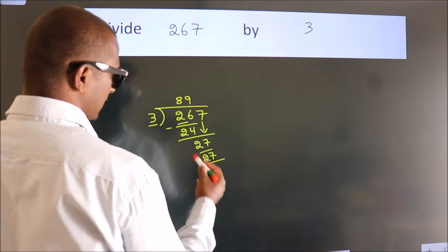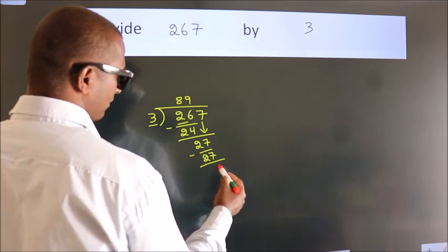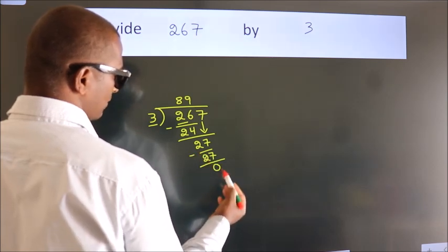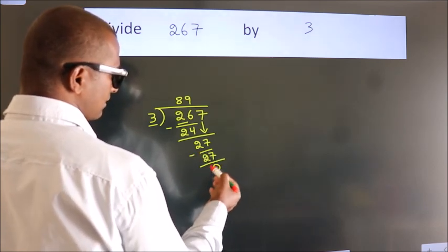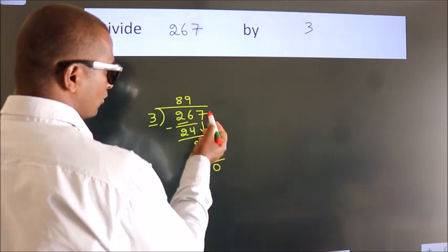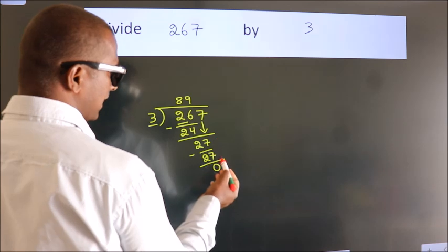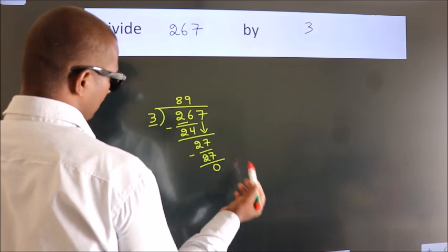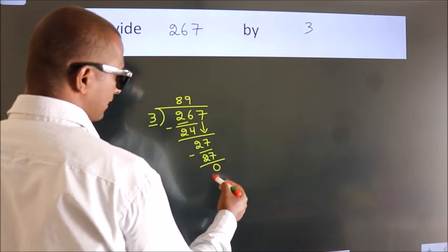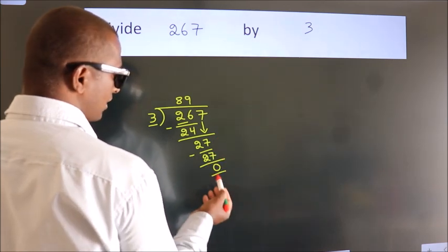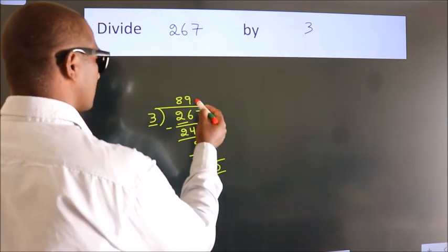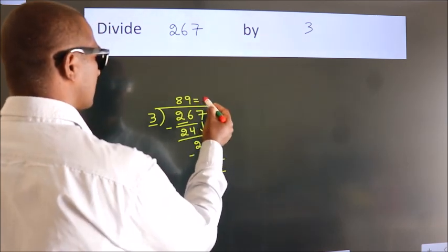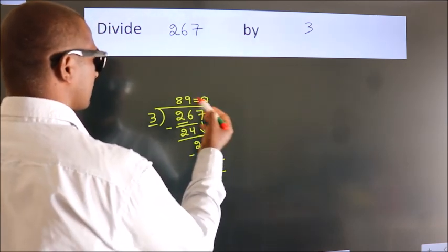Now we subtract — we get 0. After this, there are no more numbers to bring down. We got remainder 0. So this is our quotient.